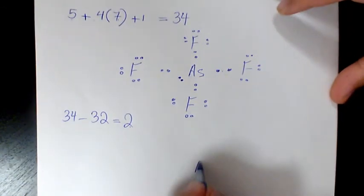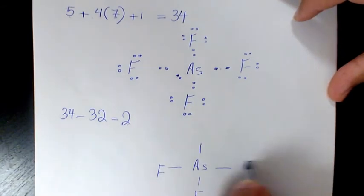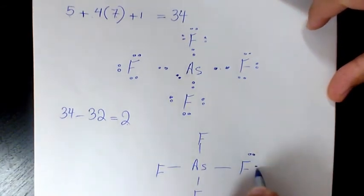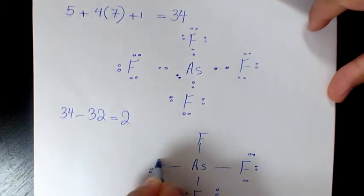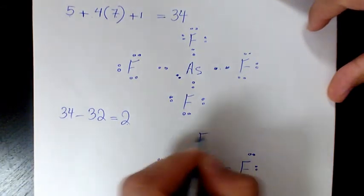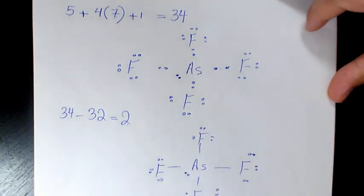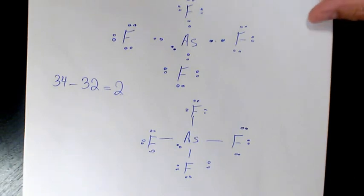That's the Lewis structure — we use dashes for bonding between arsenic and fluorine, and we place two electrons as a lone pair on the arsenic. That's the Lewis structure for the arsenic tetrafluoride ion.